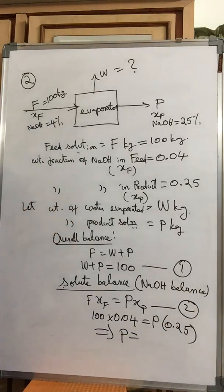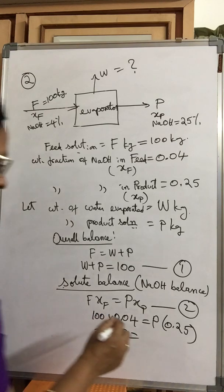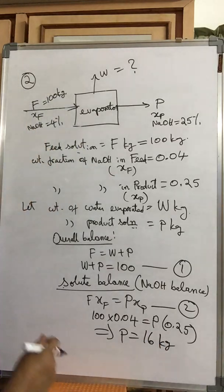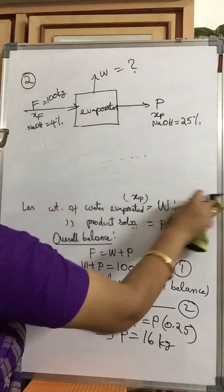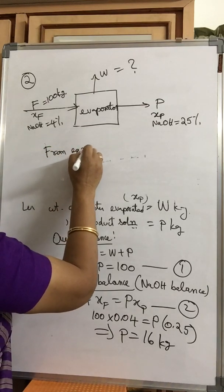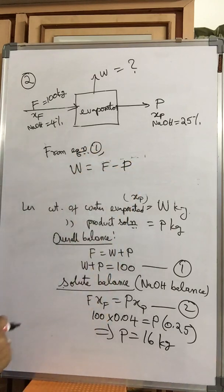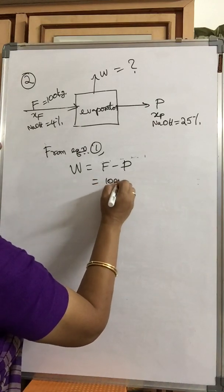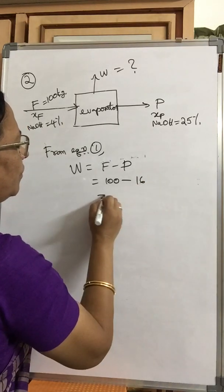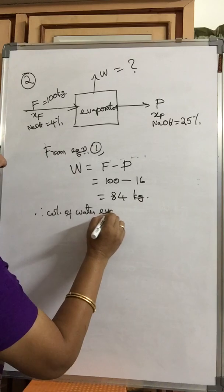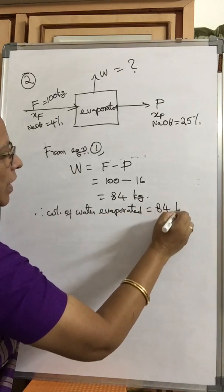From Equation 2, we directly get P = (100 × 0.04) / 0.25 = 16 kg. From Equation 1, W = F − P = 100 − 16 = 84 kg. Therefore, weight of water evaporated is 84 kg.